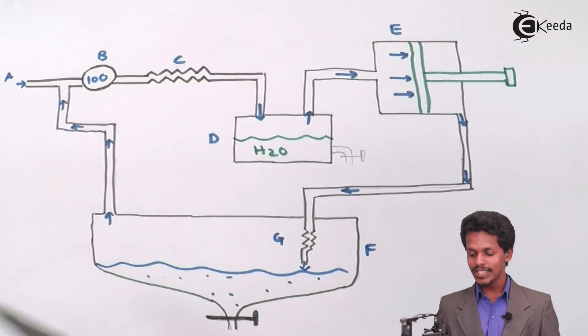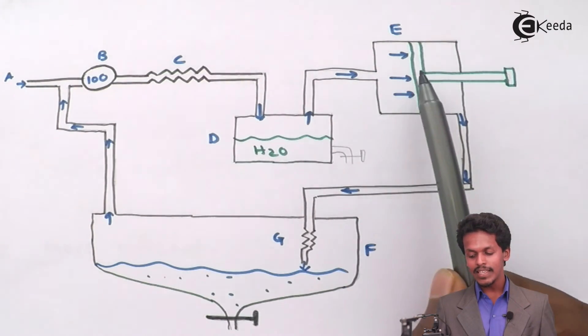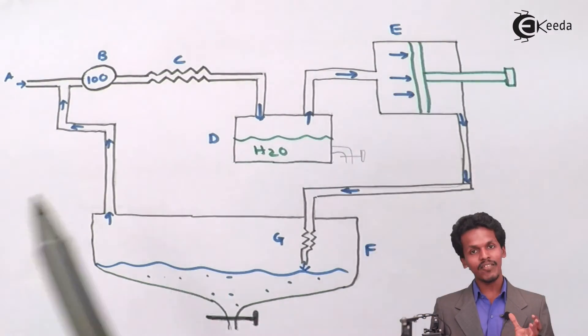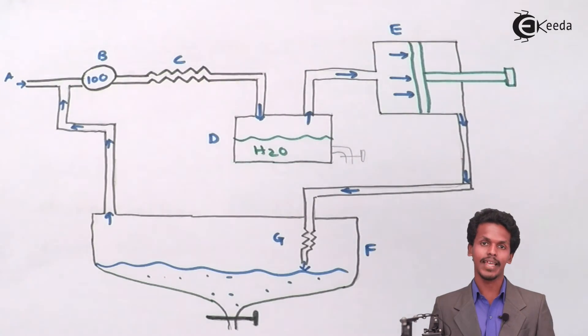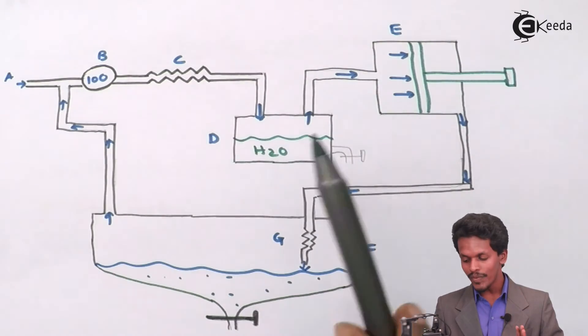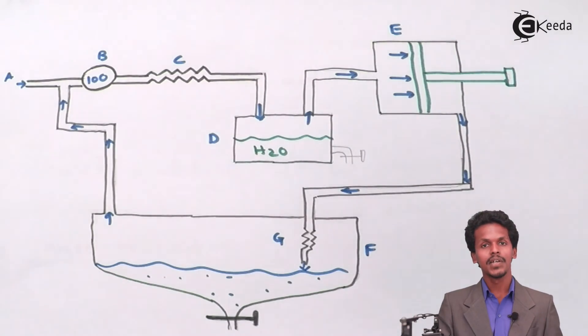So the most advantage in this process is, it is more efficient. Why? Because in this case, we are letting the gas to perform work. And because of that, the gas gets cooled. Because most of the energy was being transformed in moving this piston. So this makes the gas to get cooled.